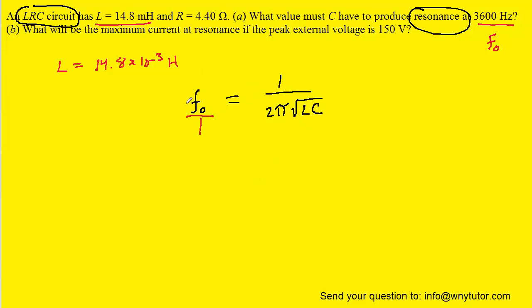So when we cross multiply in this direction right here, we're going to have the resonance frequency multiplied by 2 pi times the square root of LC. And then when we cross multiply the other way, we just have 1 times 1, so that equals 1.